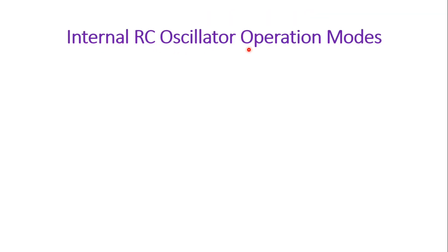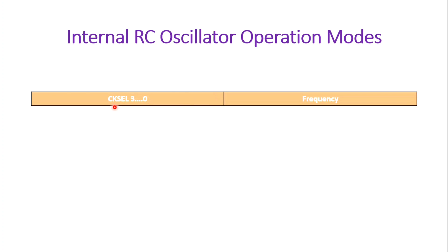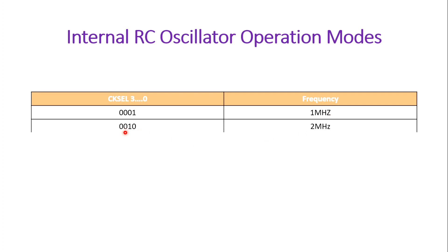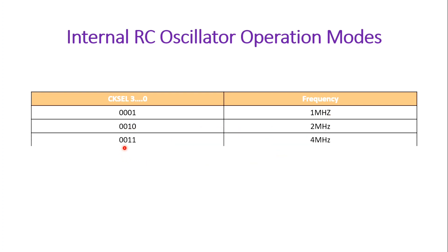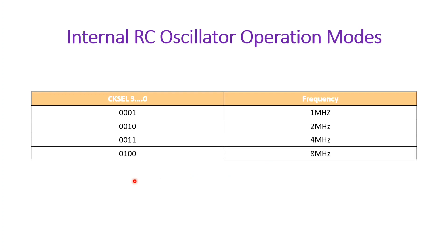Let us discuss the internal RC oscillator operation modes. We have to configure these 4 bits of the lower fuse byte. If it is 0001, it will select 1 MHz internal RC oscillator by default. If it is 0010, then 2 MHz. 0011 is for 4 MHz, and 0100 is for 8 MHz. Out of these four options, it is up to us which frequency we want to operate our microcontroller on. Once you select any one of these bit values, it will select the internal RC oscillator of the ATmega32 and work as per the user's requirement.